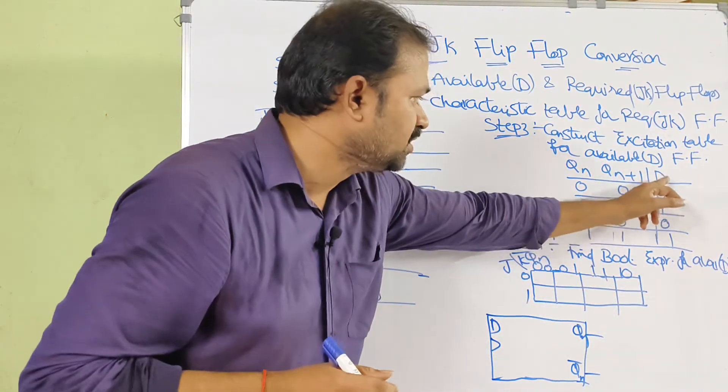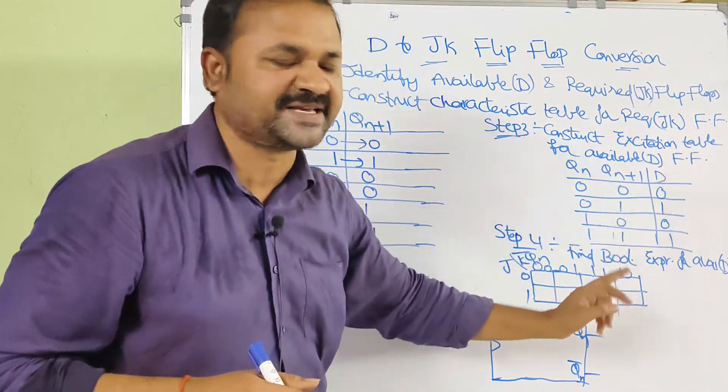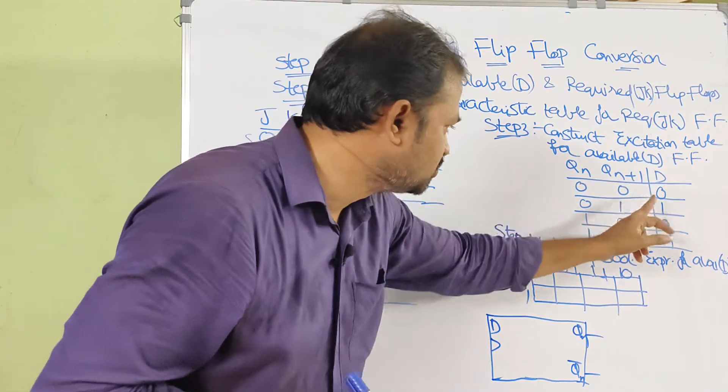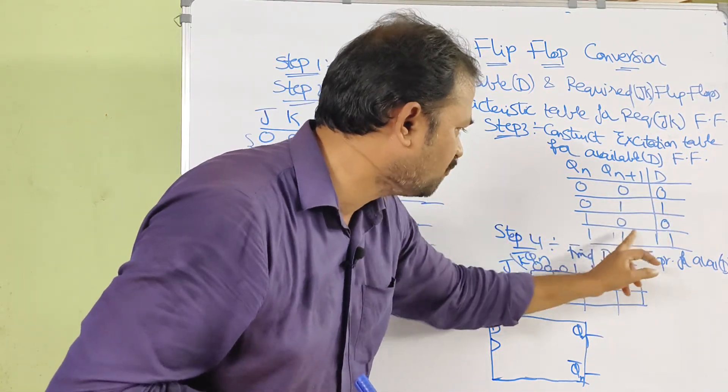So the D column is the same as Qn+1: 0, 1, 0, 1.